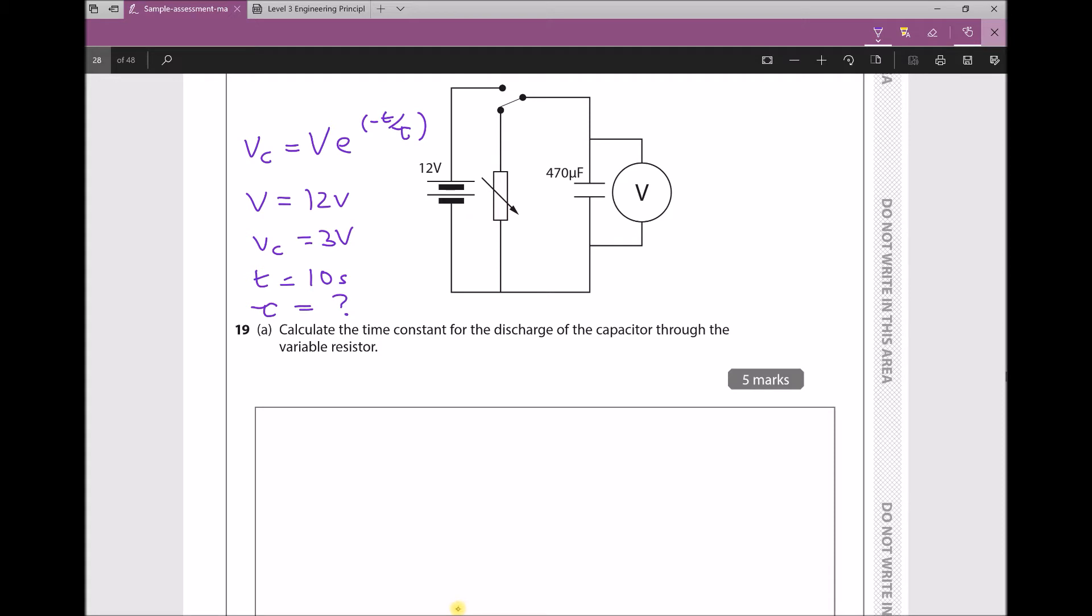The first step is to rearrange our equation to make tau the subject. So we have VC = V*e^(-T/τ). At the moment, the thing we're trying to find is tied up in that exponential. The first step to rearranging this is to divide each side by V because we're trying to get the exponential on its own. We want to isolate that first. So when we divide by V each side, we get VC/V = e^(-T/τ).